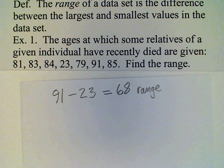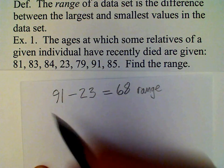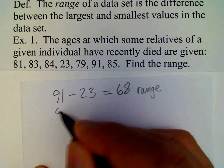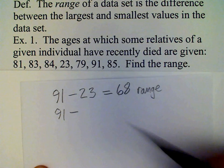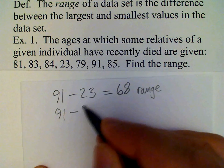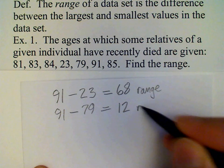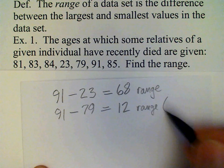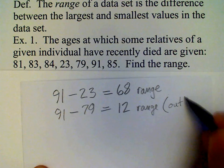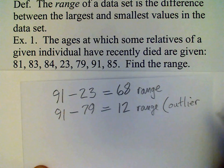If we exclude this, what is known as an outlier value, we get a smaller range. 91 minus 79 is a range of 12 with the outlier removed.